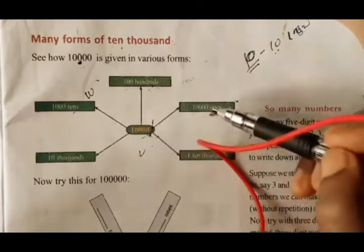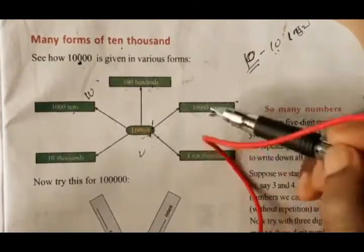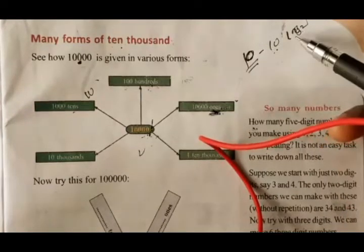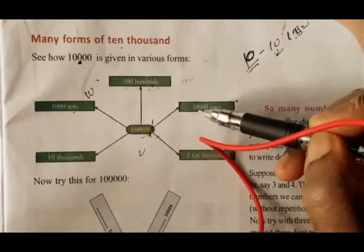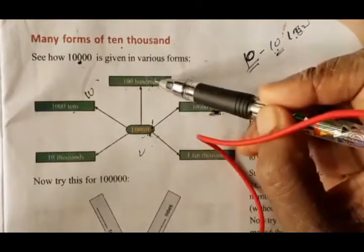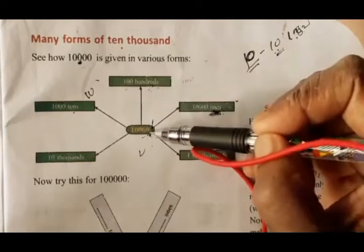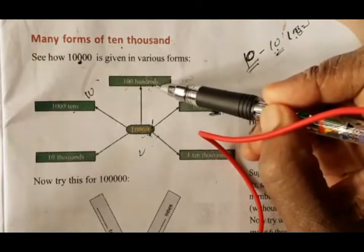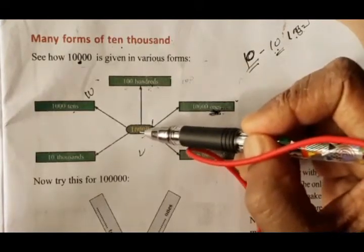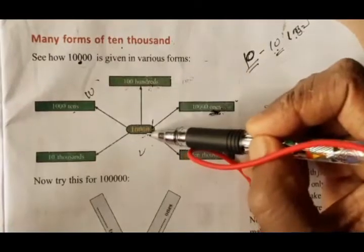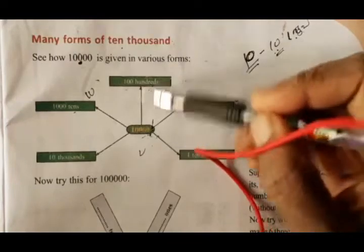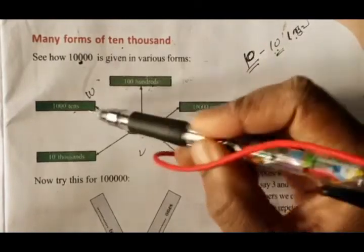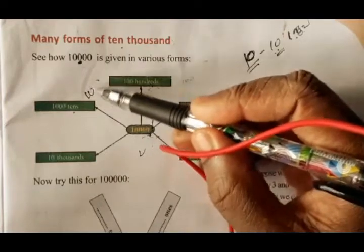10,000 is equal to 1,000. That is the answer. 10,000 is equal to 1,000. 100 is equal to 1,000. I think I will give you the answer. 100 is equal to 1,000. How much is 10,000?